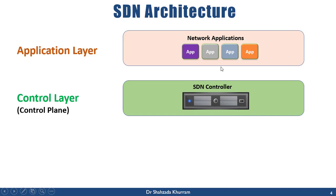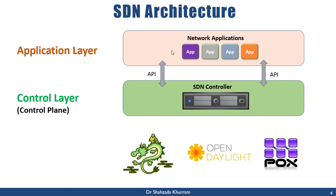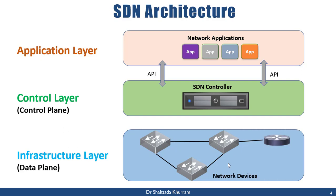The application layer interacts with the SDN controller through APIs. Using these APIs, network applications pass instructions to the controller on how to manage the complete network topology. There are many open source SDN controllers available, such as OpenDaylight and OpenDove. We can use any one of these in our environment.